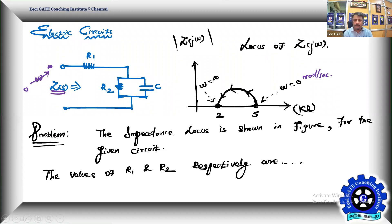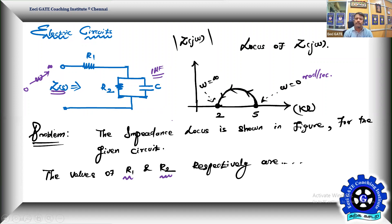The impedance locus is shown in the figure for the given circuit. The values of R1 and R2 respectively are to be found. The locus starts from omega equal to zero and ends at omega equal to infinity. Probably C is also given, but it is not really coming into play.